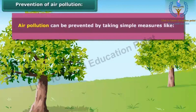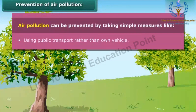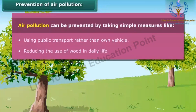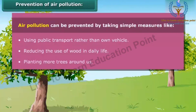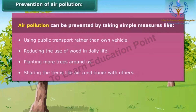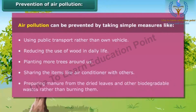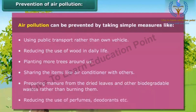Air pollution can be prevented by taking simple measures: using public transport rather than a personal vehicle, reducing the use of wood in daily life, planting more trees around us, sharing items like air conditioners with others, preparing manure from dried leaves and other biodegradable wastes rather than burning them, and reducing the use of perfumes and deodorants.